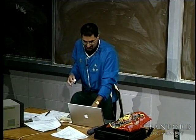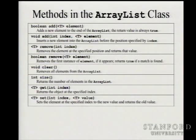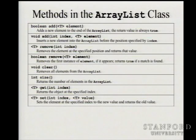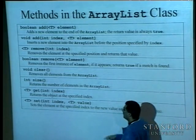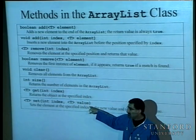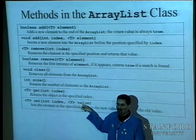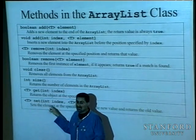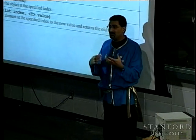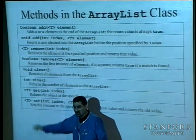Besides adding and removing, 'get(index)' returns the object at a specified index without removing it from the ArrayList. So if there's an element at position 1 and you call get, it remains at position 1. If you call remove, it's actually removed. Then there's 'set(index, element)' — you give it an index and a value, it puts that value at that index, and returns the old value that was there. So it's a quick sleight-of-hand: slam something new in, get the old value out.